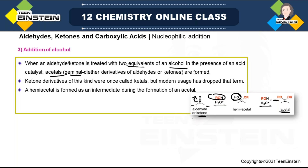An acetal is basically a geminal diether. 'Geminal' means same groups attached to the same carbon. It is called diether because ether means C-O-C linkage must be present, and here we have two R-O-C linkages. The ketone derivative of this kind was once called a ketal, but the modern usage is that this term is no longer used — for both aldehyde and ketone-derived geminal diethers, the name is always acetal.